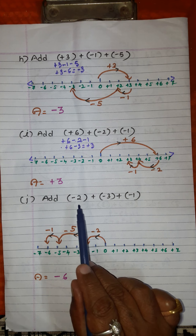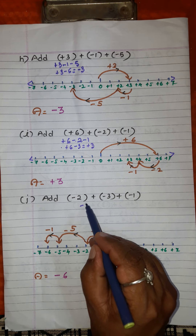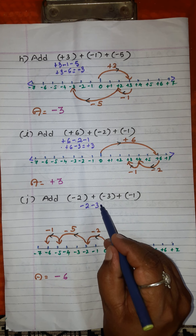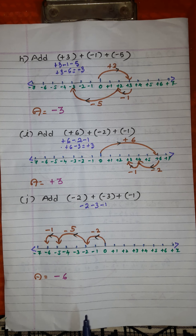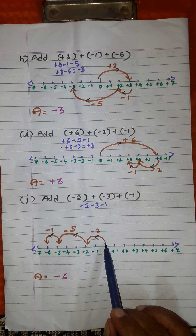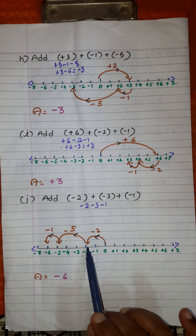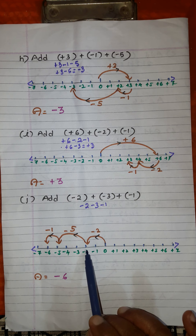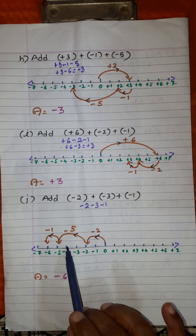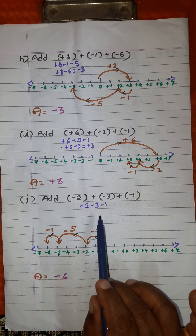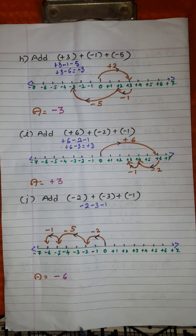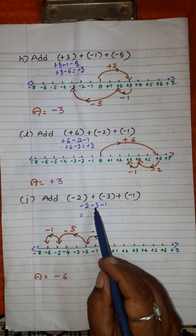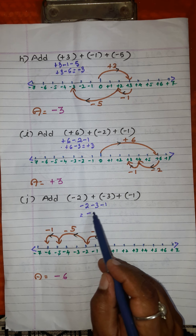The last problem: add minus 2, minus 3, and minus 1. Simplify: minus 2, plus into minus is minus 3, plus into minus is minus 1. Draw a number line marking positive integers to the right of 0 and negative integers to the left of 0. Move minus 2 divisions to the left — you arrive at minus 2. Move 3 more divisions to the left: 1, 2, 3 — you arrive at minus 5. Then move 1 more division to the left — ultimately you arrive at minus 6. Answer is minus 6. So minus 2 plus minus 3 plus minus 1 gives minus 6.